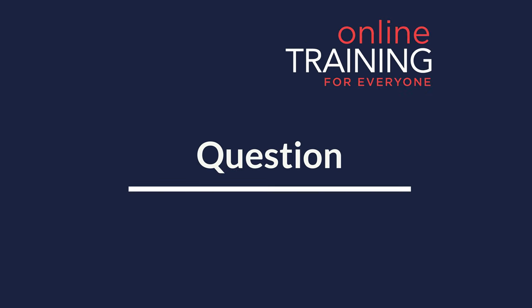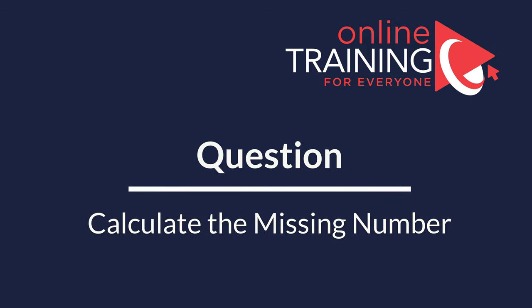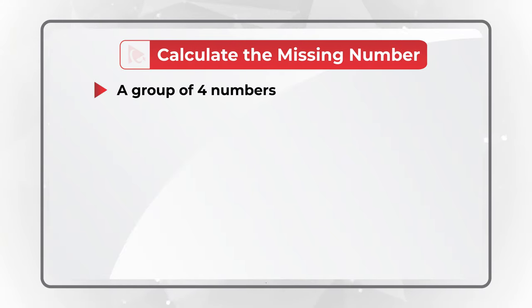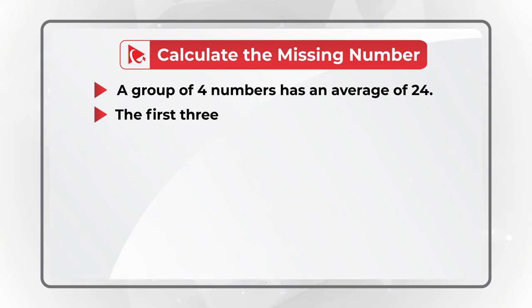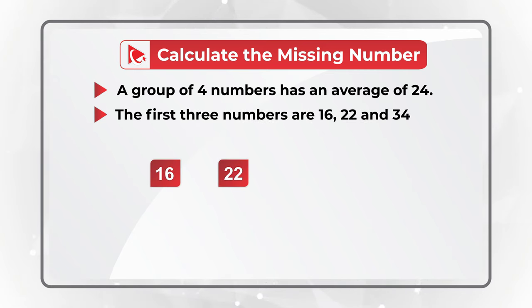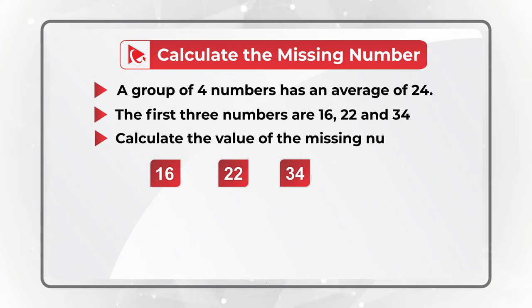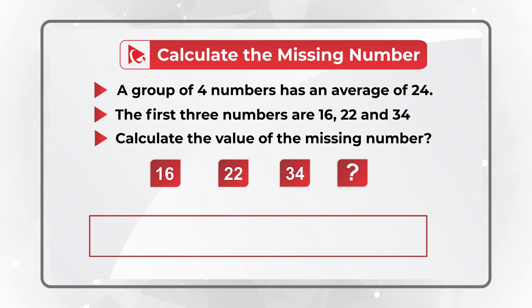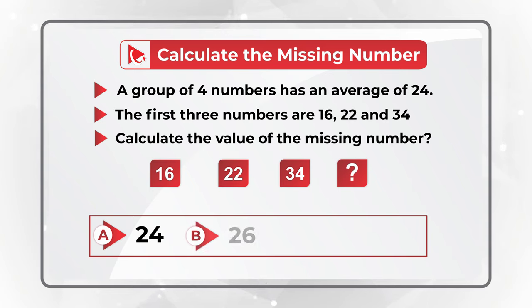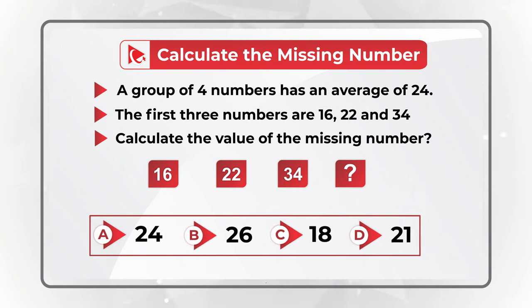Here is one of my favorite questions where you need to do mental math calculations. You are presented with a group of four numbers with an average of 24. The first three numbers are 16, 22, and 34. You need to calculate the value of the missing number. You have four different choices: Choice A, 24. Choice B, 26. Choice C, 18. And choice D, 21. Can you do the math?